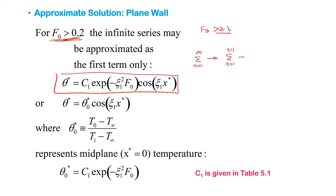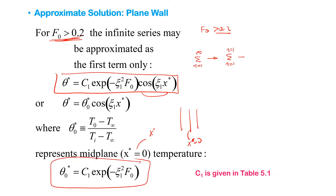This is the first-term solution. If you are interested in the mid-plane temperature, set x-star equal to 0, so cosine(0) = 1, and you only have one term. This is the temperature in the middle when the Fourier number is greater than 0.2. The coefficients ζ1 and C1 are given in Table 5.1 in the textbook.